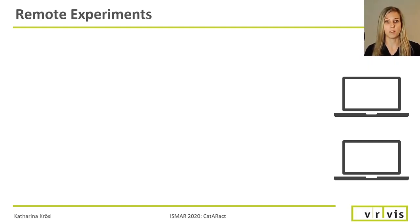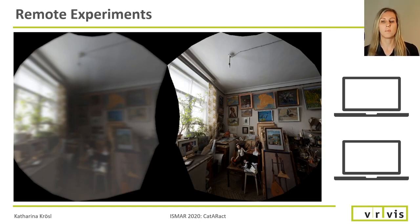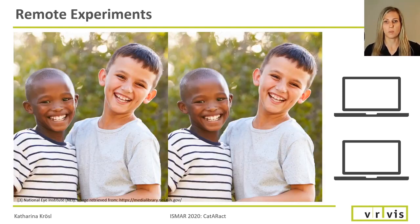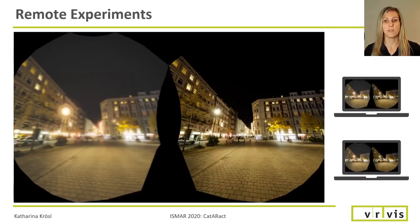We conducted further experiments with two participants who had undergone cataract surgery a few months before. We had a video call to stream live images and communicate with participants via voice chat. We asked them to compare the presented cataract simulation to their memory of their cataract vision before the surgery and adjusted the simulation according to their feedback. We also showed them images from related work, where adjustment was done by adjusting the opacity of the cataract image when blending it over the original.